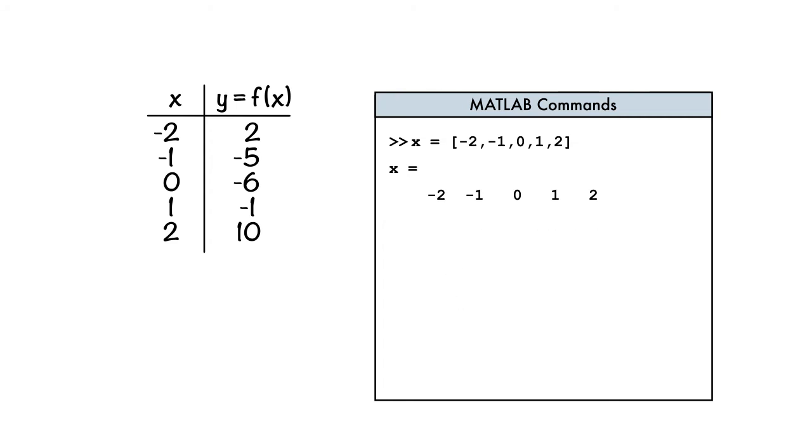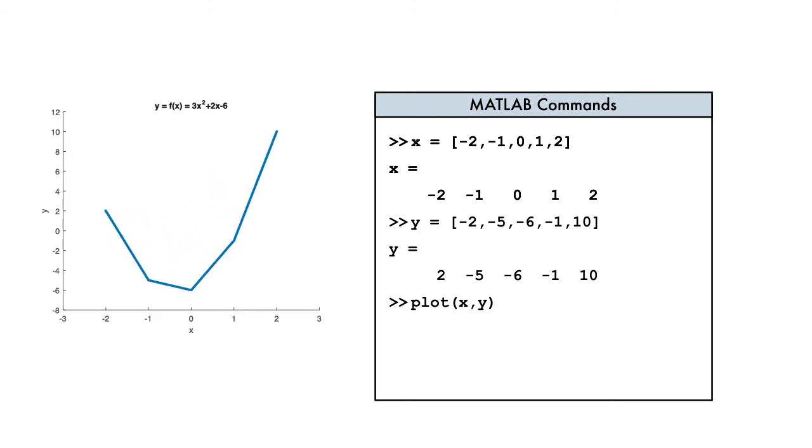Now back to that plot. Let's go ahead and create y as a row vector too. Then we call the plot function, using our x and y vectors as inputs, and there you go. We have a plot of our points.